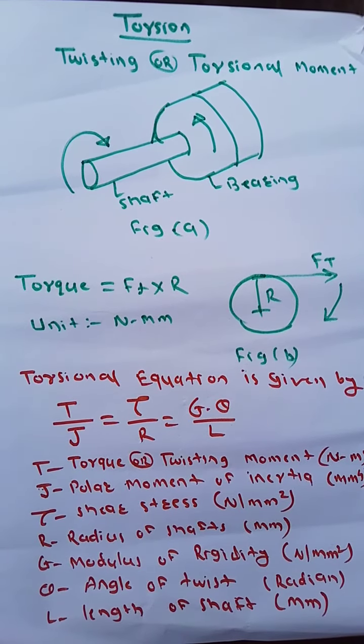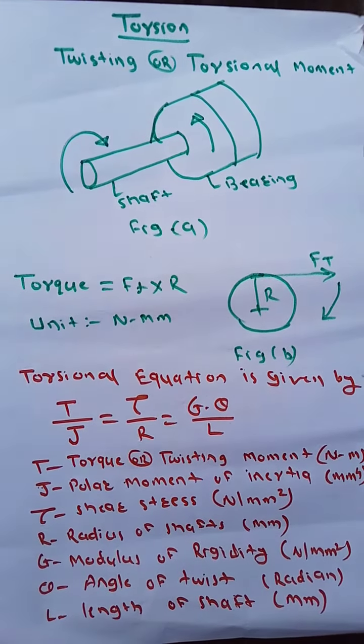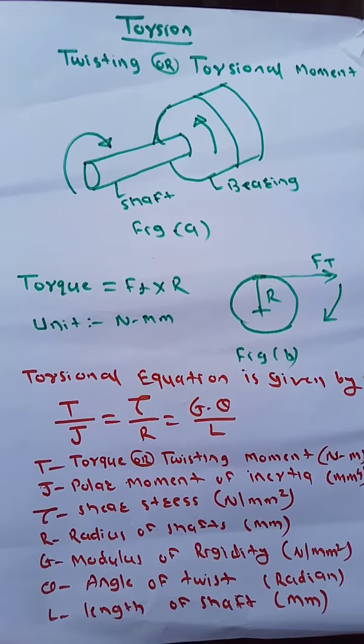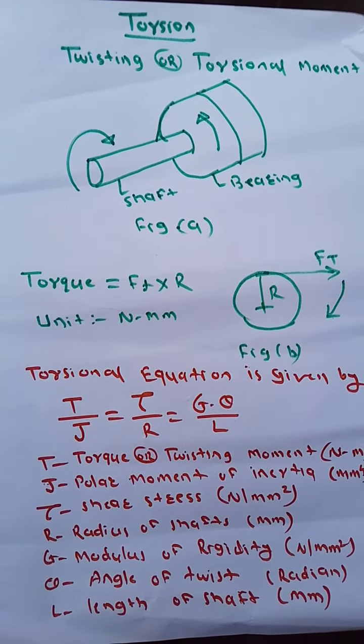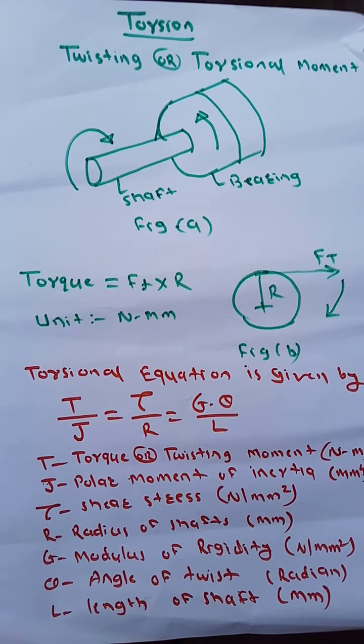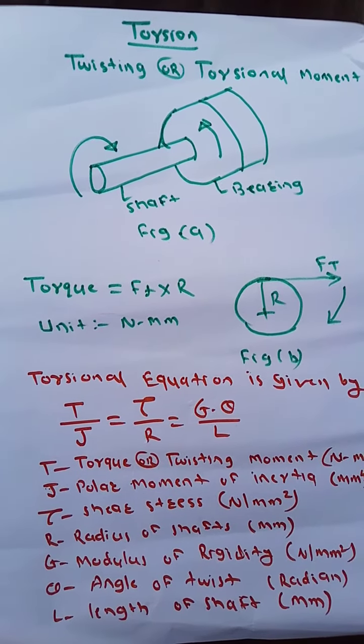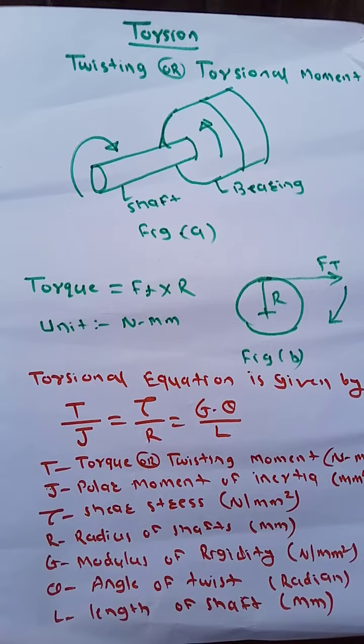Today we will see torsion. Torsion means twisting or torsional moment, and this can be explained with the help of Figure A, where a shaft is supported in bearing and at the free end of the shaft the torque is applied.